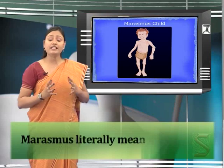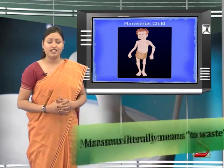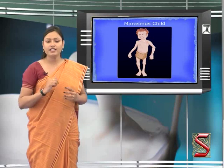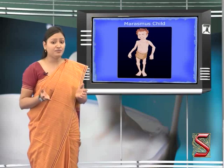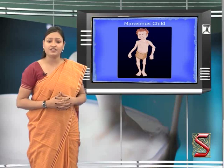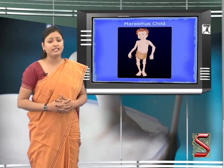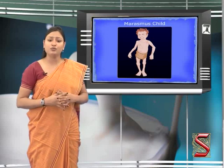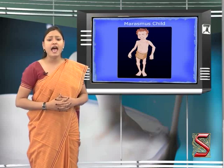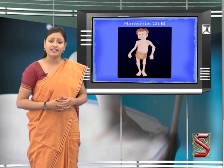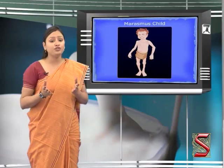Marasmus literally means 'to waste.' It mainly occurs in children under one year of age. Marasmus is due to deficiency of both proteins and carbohydrates, but is predominantly due to calorie deficiency. The child is weaned before one year and is fed a low-protein and low-carbohydrate diet. This deficiency is also seen during famines.